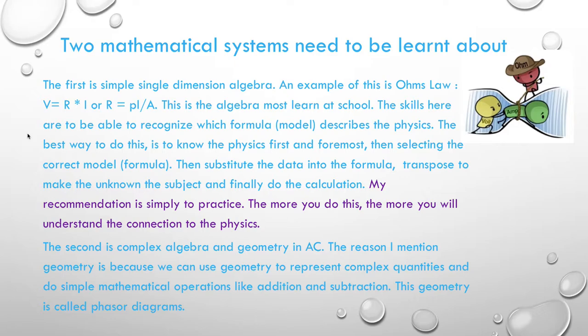Here my recommendation is reasonably straightforward. Simply to do practice. The more you do this the more you will understand the connections to the physics. The maths is not the physics. But the maths will help get the relationships of the physics correct in your head. So the second is complex algebra and geometry in AC. The reason I mention geometry is because we can use geometry to represent complex quantities and do some simple mathematical operations like addition, subtraction. And this geometry is called phasor diagrams. And if you haven't done any AC yet when you get to AC you will learn all about phasor diagrams.